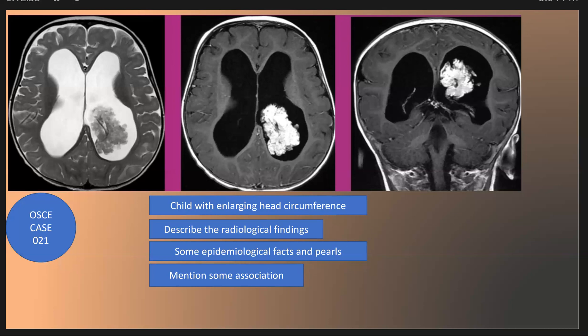What are some associations with choroid plexus papilloma? On MRI, choroid plexus papilloma can be associated with Aicardi syndrome or Von Hippel-Lindau disease, and hemangioblastomas are a recognized association. On MRI, choroid plexus papilloma shows avid enhancing frond-like solid components.